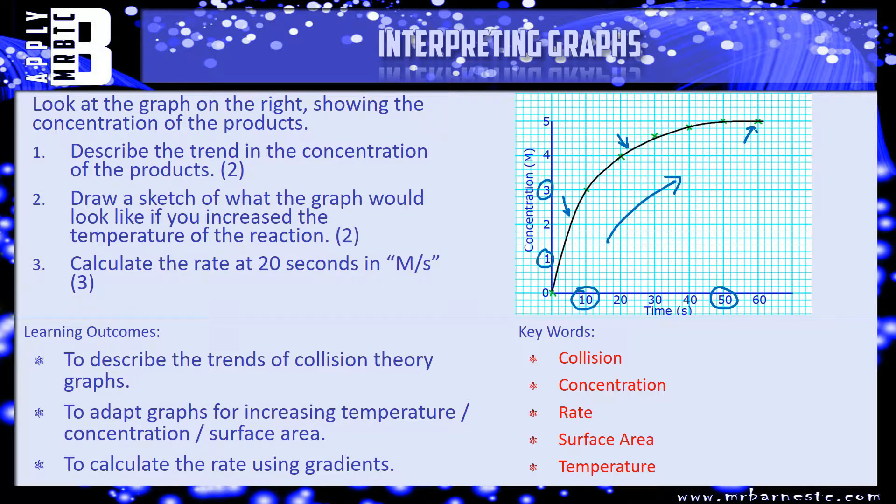Number two says, draw a sketch of what the graph would look like if you increase the temperature of the reaction. So, is it going to be steeper? Like that. Is it going to be shallower? Like that. And where is it going to end? You get one mark for each of those bits.